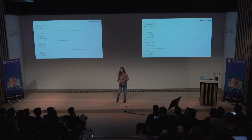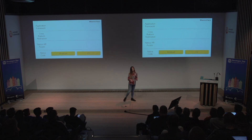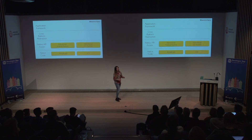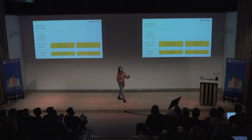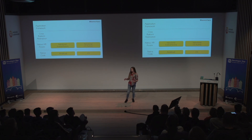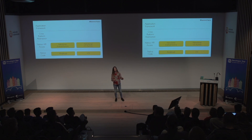Let's take apart the NativeScript architecture. On the bottom we have Android and iOS. Then we have a second layer, the NativeScript runtimes — two separate pieces for Android and iOS — whose purpose is to provide a way to execute JavaScript on Android and iOS and access the underlying native APIs, not just the hardware but also UI widgets and layouts.